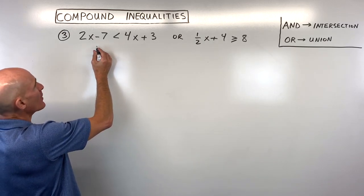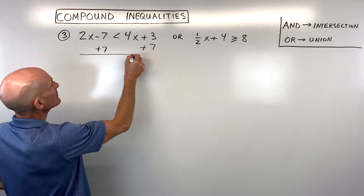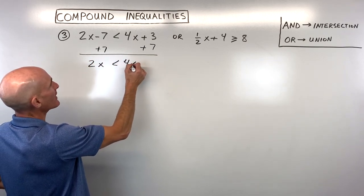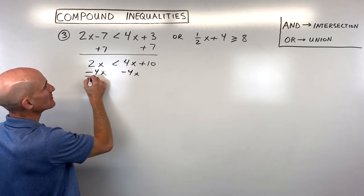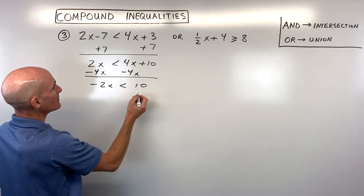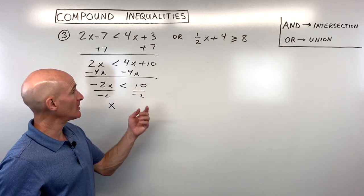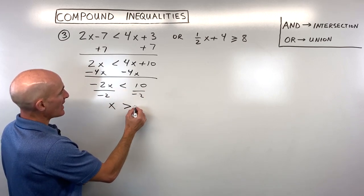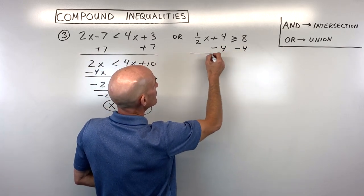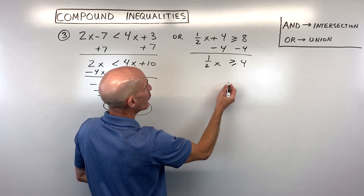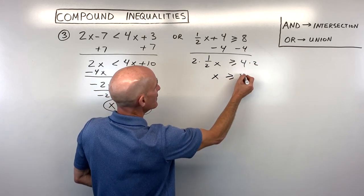For the first inequality, add 7 to both sides to get 2x is less than 4x plus 10, then subtract 4x to get negative 2x is less than 10, then divide by negative 2. Remember, dividing by a negative flips the sign, so x is greater than negative 5. For the second inequality, subtract 4 to get one-half x is greater than or equal to 4, then multiply both sides by 2, giving x is greater than or equal to 8.